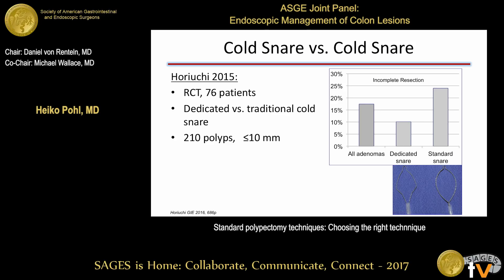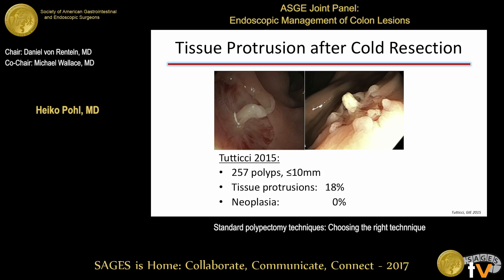If you use a cold snare, use a dedicated cold snare. One study comparing a dedicated cold snare to a standard snare found the incomplete resection rate doubled with the standard snare: 20% versus 10% with the dedicated cold snare. When you start doing this, you may notice tissue protrusions at the resection site—this is not neoplasia, just fibrous tissue from the submucosa. An Australian study found this occurred in 18% of removed polyps and in no case was neoplasia identified, so do not try to remove it.